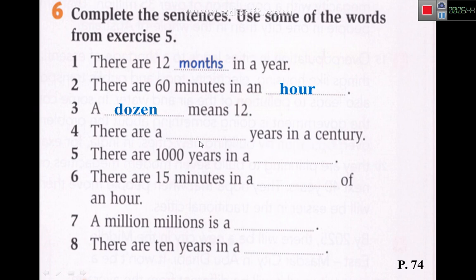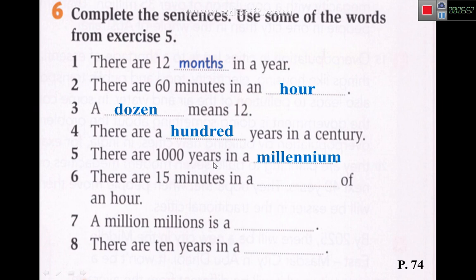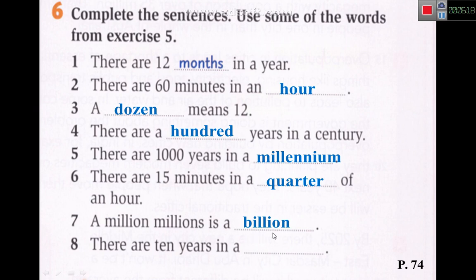There are a hundred years in a century. There are a thousand years in a millennium. Number six: there are fifteen minutes in a quarter of an hour. A million million is a billion. There are ten years in a decade.